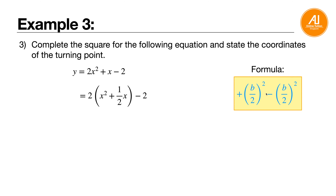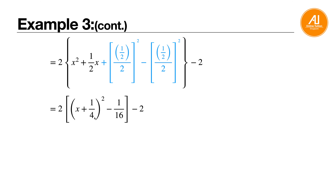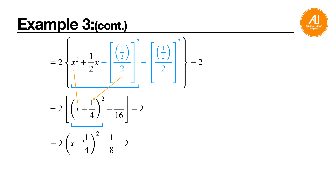Apply the formula again: b over 2 bracket squared minus b over 2 bracket squared. Bring down x squared and half x, then insert the formula. Your b in this case is half. So: half over 2 bracket squared minus half over 2 bracket squared. Half over 2 is 1 over 4, so: plus 1 over 4 bracket squared minus 1 over 4 bracket squared, which equals minus 1 over 16. The three terms condense to x plus 1 over 4, bracket squared. Then multiply through: 2 times open bracket x plus 1 over 4 bracket squared, then 2 times negative 1 over 16 becomes minus 1 over 8, minus 2.